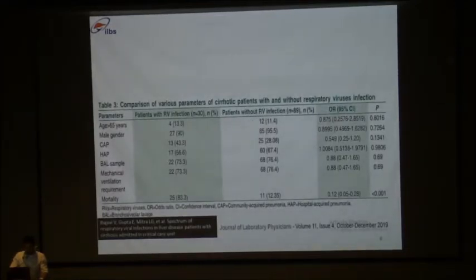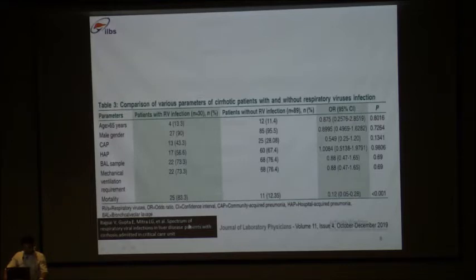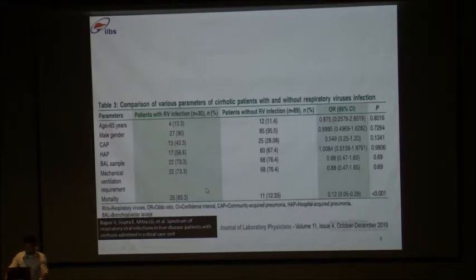From the same study, there is no difference in site of isolation, age, gender, between community and hospital-acquired pneumonia, but there is a significant difference in mortality. In the ICU setting, mortality is 83.3% when the patient is infected with a respiratory virus, dropping to 12.35% when the patient is without respiratory viral infection. Given the high mortality rate of viral infection in cirrhotic patients in critical care units, it is almost like a death sentence — 83.3% mortality.